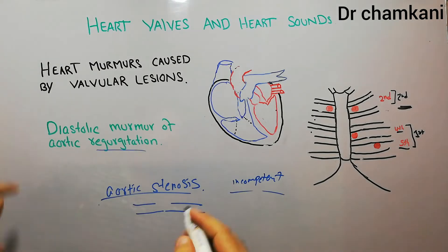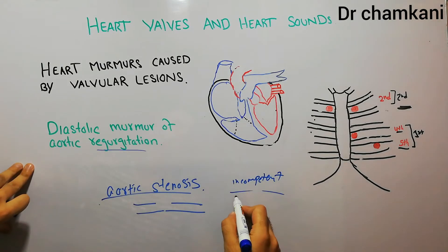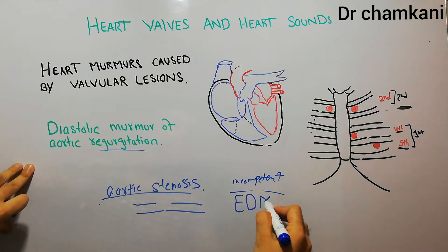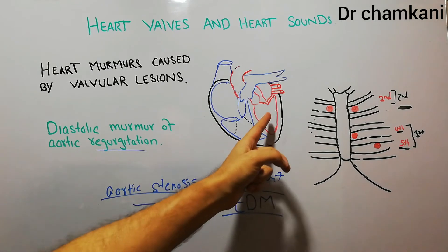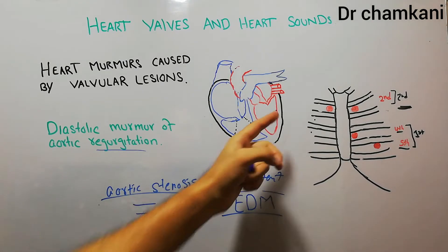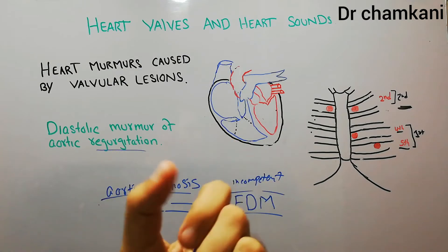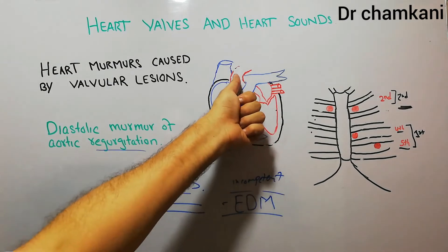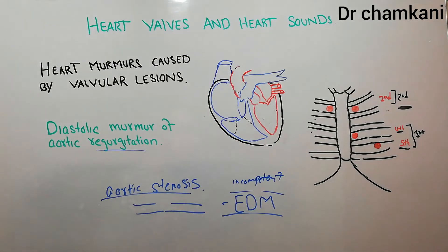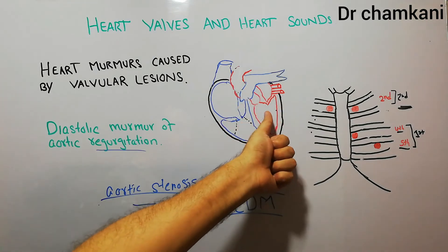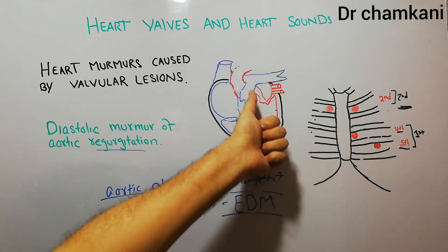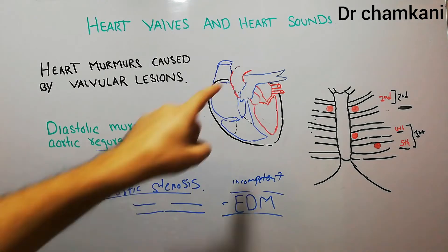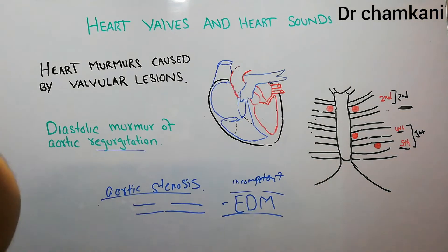This diastolic murmur of aortic regurgitation is basically an early diastolic murmur, because it starts as soon as the left ventricle enters diastole. As soon as the left ventricle starts relaxing, the pressure in the aorta is high because the blood in the aorta is under high pressure. The left ventricle contracts very forcefully and the force of the left ventricle is transmitted into the aorta, so the blood in the aorta is under high pressure.